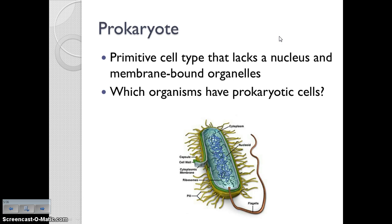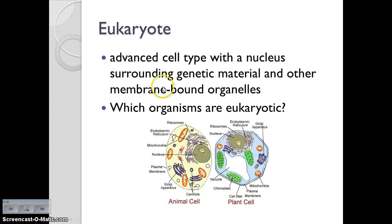There are two major types of cells: prokaryotic cells and eukaryotic cells. Prokaryotic cells are a primitive cell type that lack a nucleus and other membrane-bound organelles — they do not have a nucleus. There is only one type of organism that is prokaryotic, and that is bacteria. Everything else is eukaryotic. Eukaryotic cells are a more advanced cell type that have a nucleus surrounding genetic material and other membrane-bound organelles — like the mitochondria, chloroplast, and Golgi body.